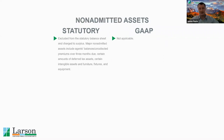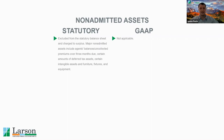One other unique aspect of insurance investment accounting and insurance accounting in general is the presence of admitted and non-admitted assets. Under statutory accounting, certain assets are excluded from the statutory balance sheet and directly reduce surplus. Major non-admitted assets include agent balances, uncollected premiums over three months due, certain amounts of deferred tax assets, certain intangible assets, and furniture, fixtures and equipment. We'll get into why these non-admitted assets are excluded from the statutory balance sheet.